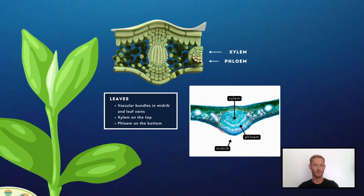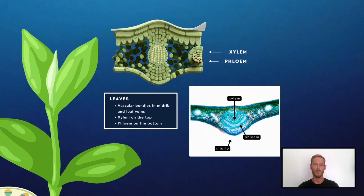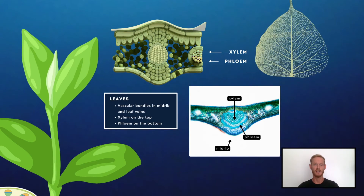In leaves, vascular bundles are present in the midrib as well as the leaf veins. The xylem is found at the top, towards the upper surface of the leaf, and the phloem is always at the bottom. Xylem vessels bring water and minerals to the leaf cells, while the sieve tubes carry away the sugars and amino acids produced by them. The presence of xylem in the veins also gives the leaf structure and helps to support the softer tissues of the leaf blade.